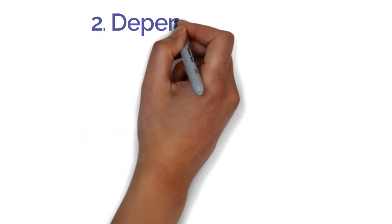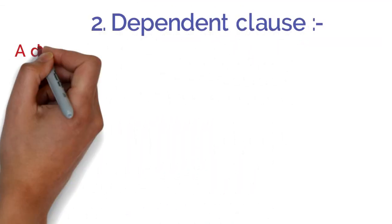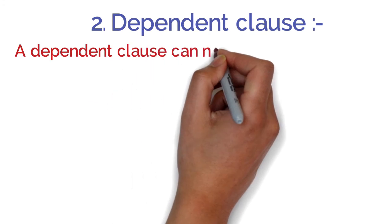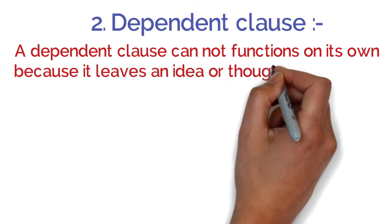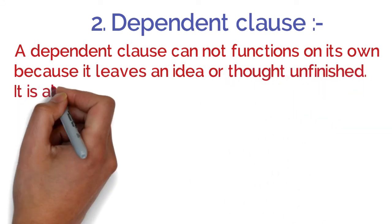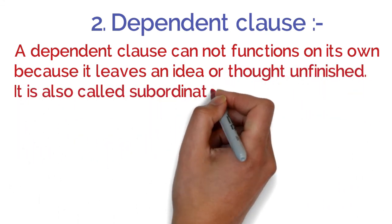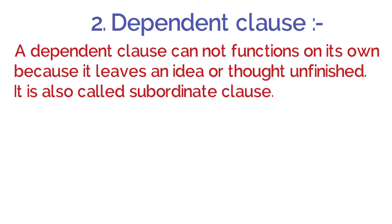The next type is the dependent clause. A dependent clause cannot function on its own because it leaves an idea or thought unfinished. It is also called a subordinate clause. Dependent clause apne aap akele koi function nahi kar sakta — yeh always independent clause par depend rehta hai, aur independent clause ke saath milkar hi ek complete meaningful sentence deta hai.